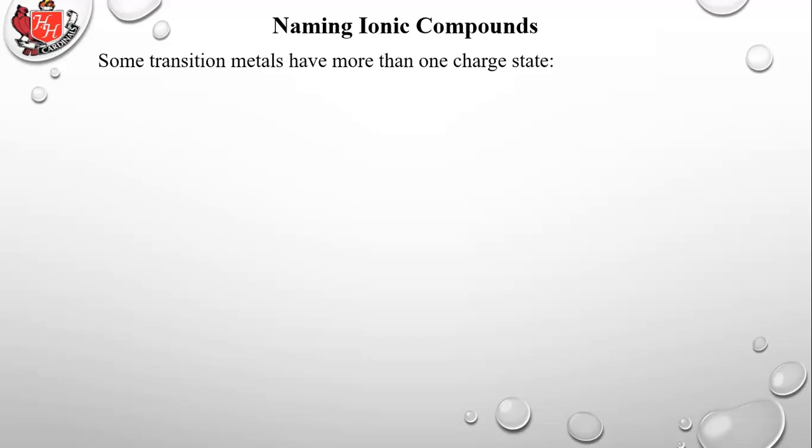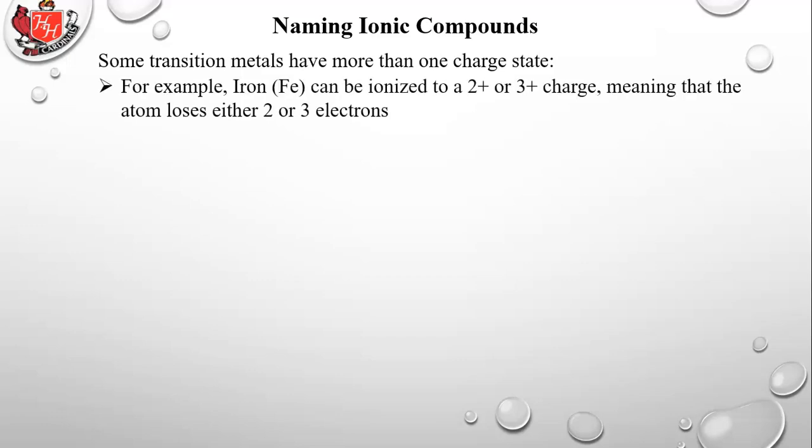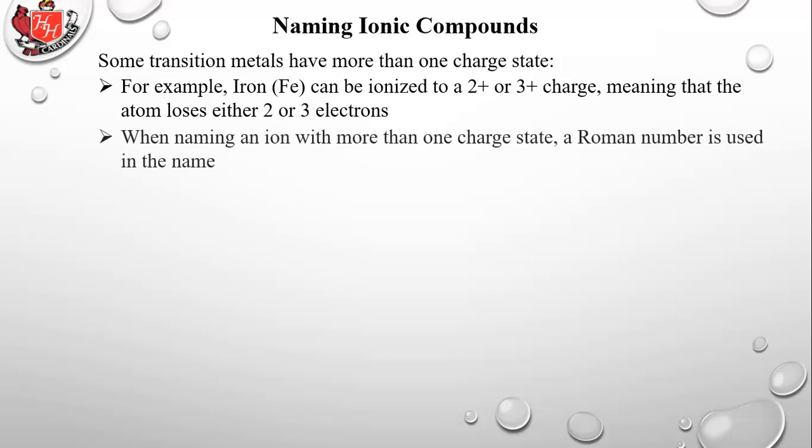Some transition metals have more than one charge state. For example, iron, which is Fe on the periodic table, can be ionized to 2+ or 3+. You just have to have a table that does this, and your charge number by ion sheet will do this. When naming an ion with more than one charge state, a Roman numeral is used in the name.